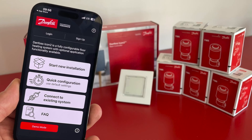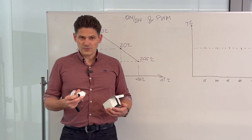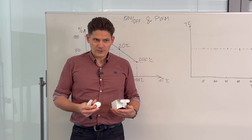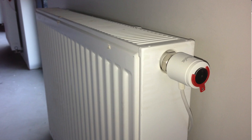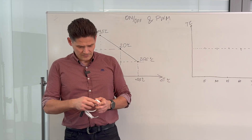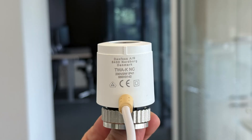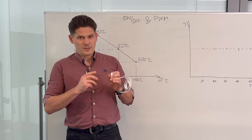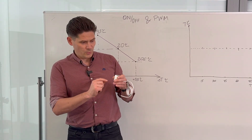Room thermostats or automatics usually use on/off actuators in our heating systems - for underfloor heating control, radiator control, or for fan coils and chilled beams control. These actuators are usually on/off 24 volts or 230 volts.